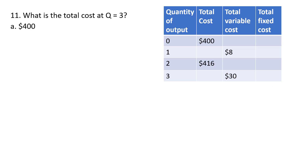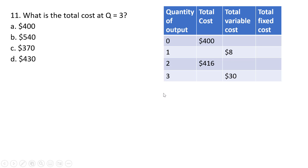Moving on to question 11, which deals with a table. What is the total cost at Q equals 3? Remember, total cost is total variable cost plus total fixed cost, so $30 plus total fixed cost. We need to figure out total fixed cost. At zero units of output, total cost is $400 and total variable cost is zero, so total fixed cost is $400. At Q equals 3, total cost is $400 plus $30, or $430. Answer choice D.